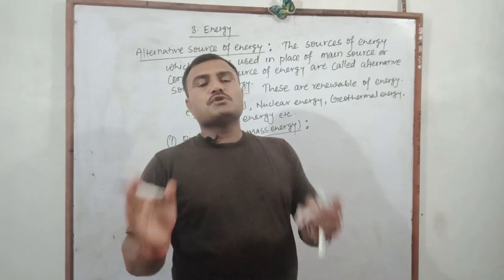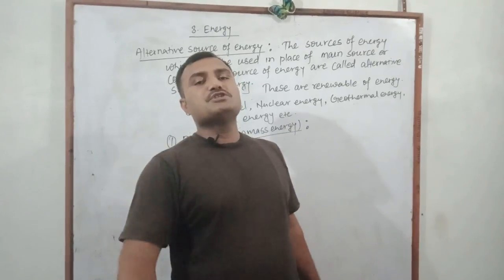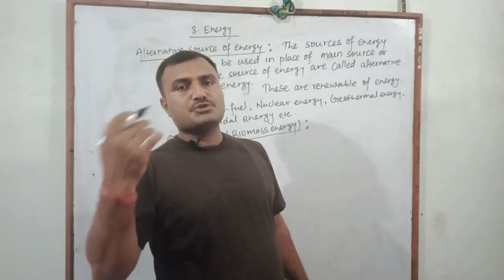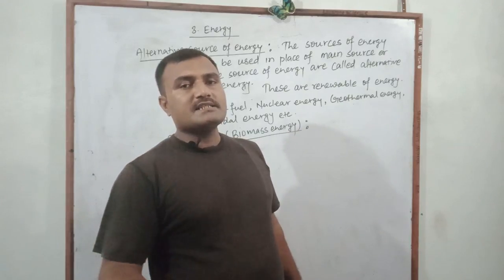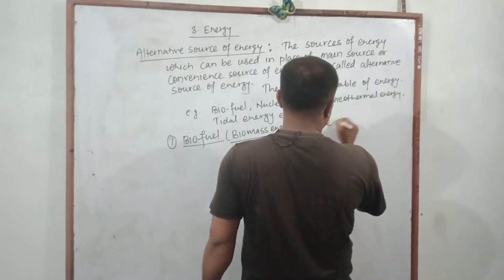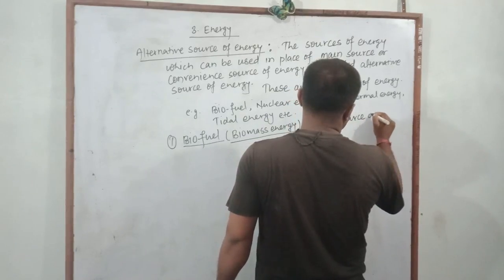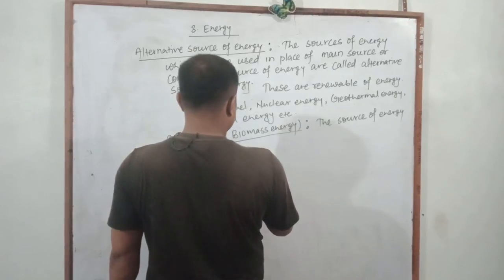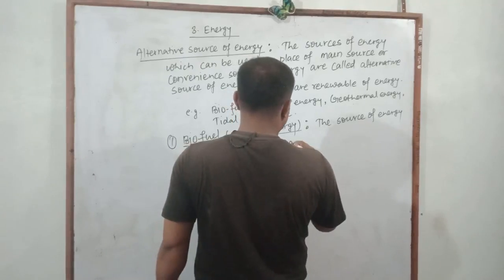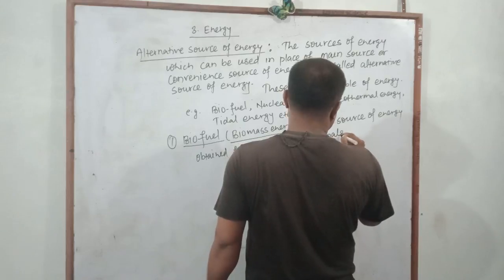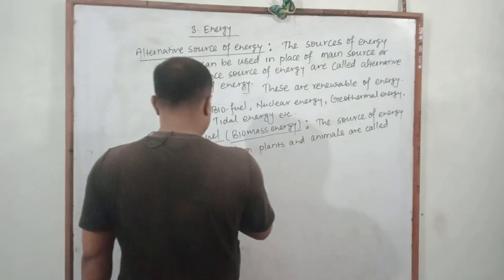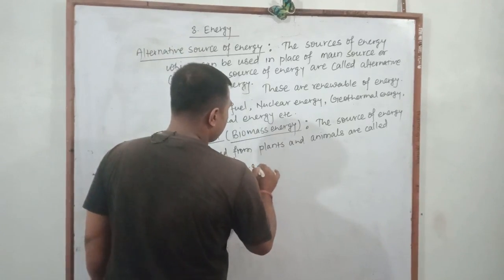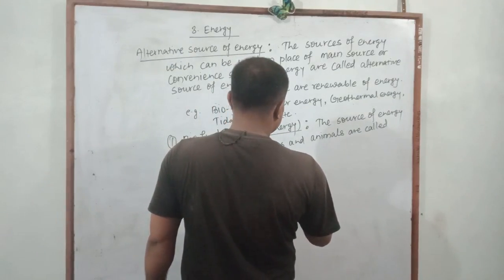We can define biomass energy as the source of energy obtained from living sources like plants and animals, and from degradable wastage. This is called biomass energy or biofuel. Biofuel can be obtained from parts of plants and parts of animals. Biofuel is a renewable source of energy.